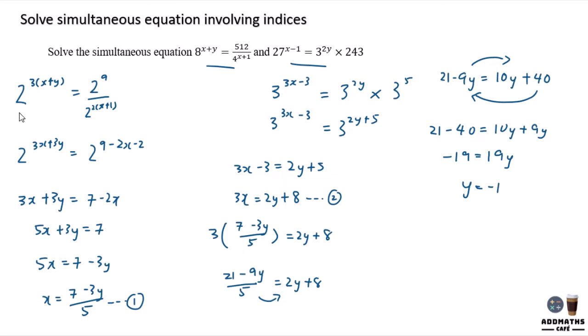Since your y equal to negative 1, you can substitute back to your first equation here. And 7 minus 3 times negative 1, so minus minus positive, 7 plus 3 will give you 10 over 5 and the x value will be equal to 2. So this is how you do simultaneous equations involving indices.